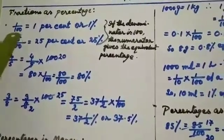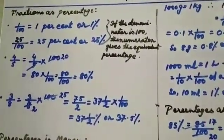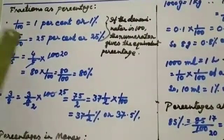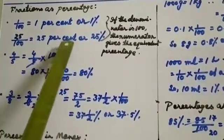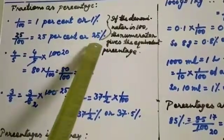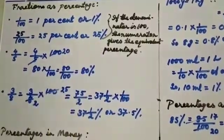Similarly, 25 by 100 is equal to 25 percent — you will write it like this.